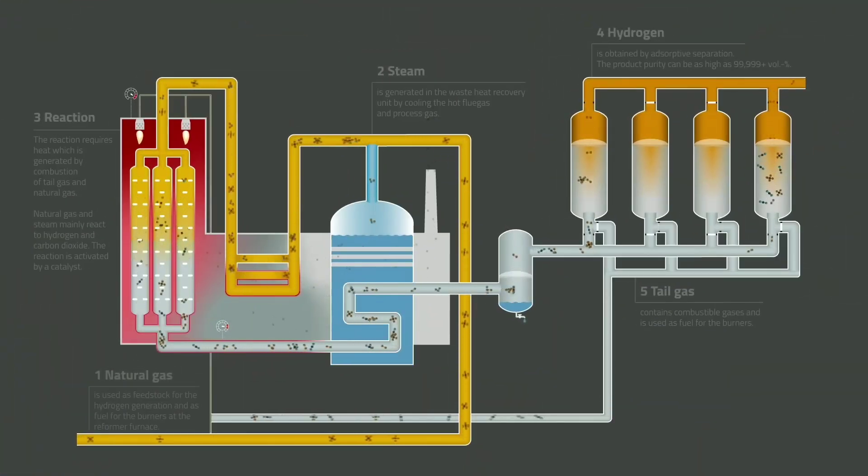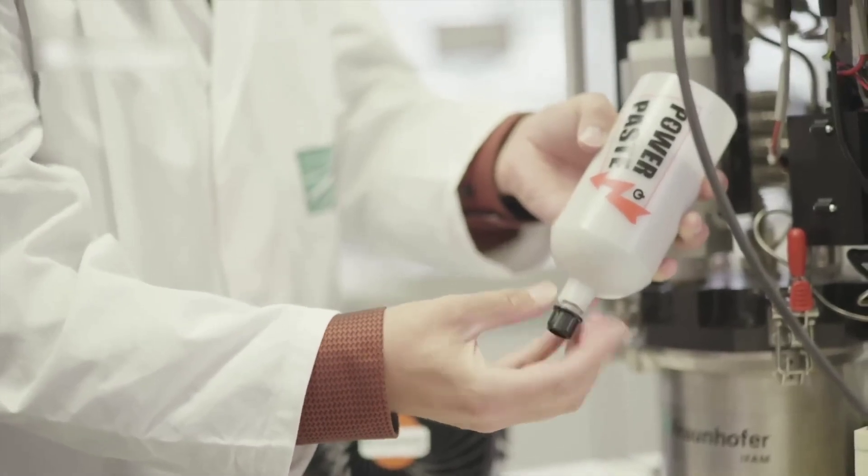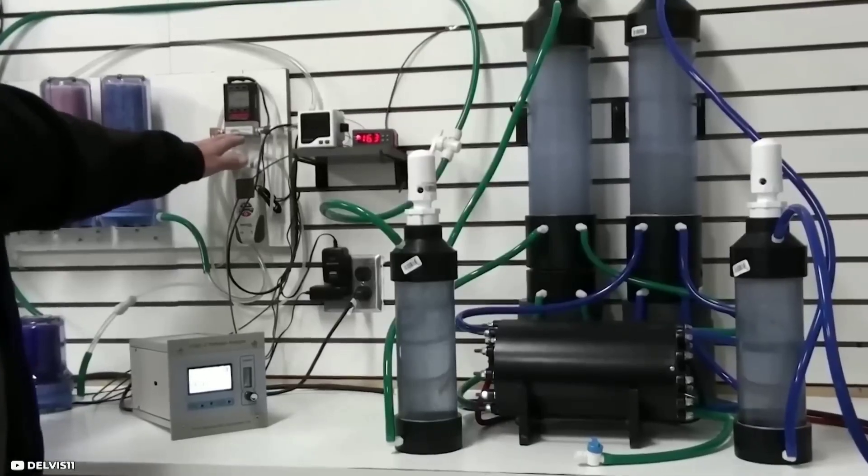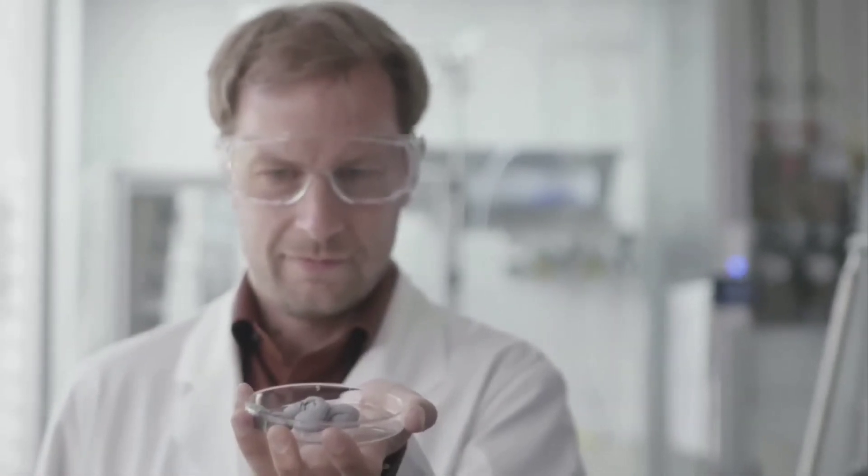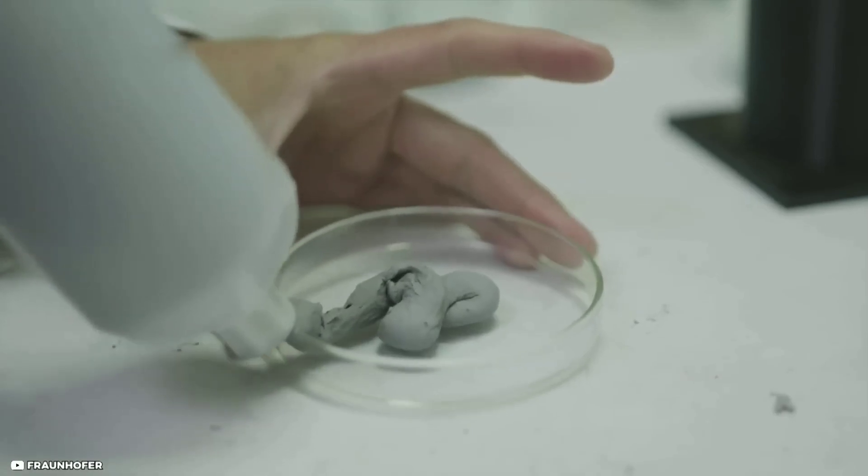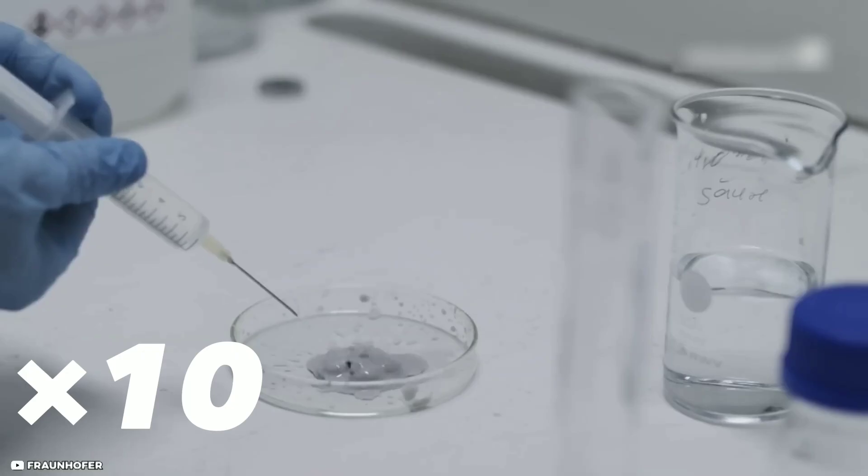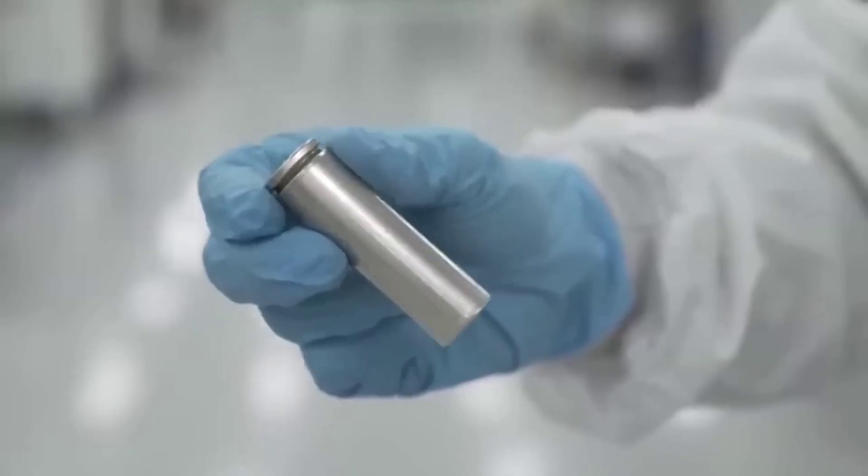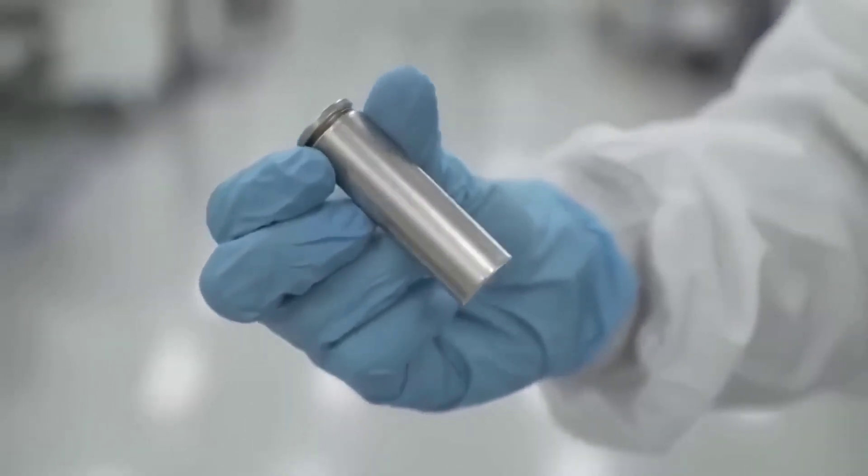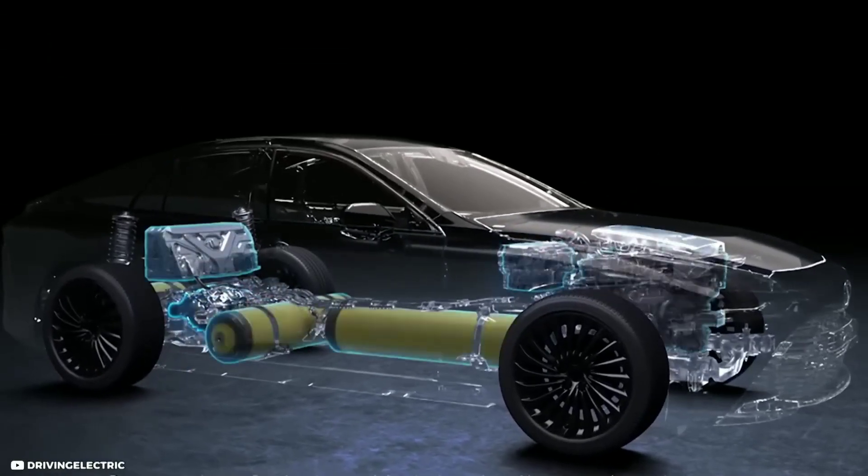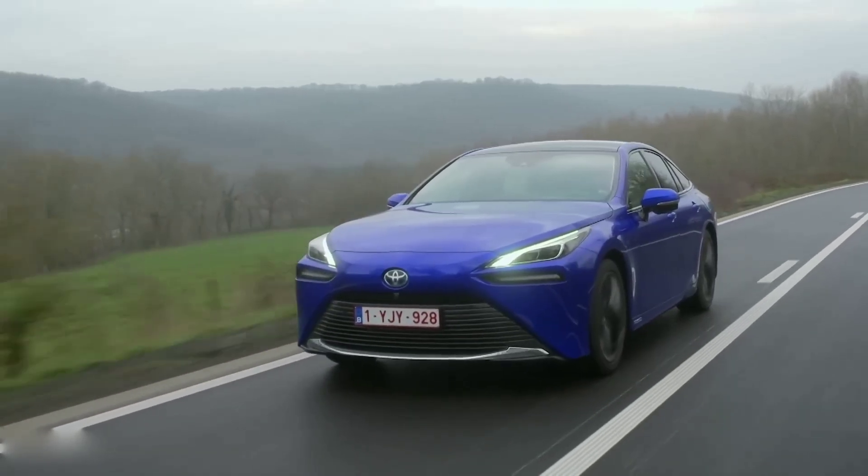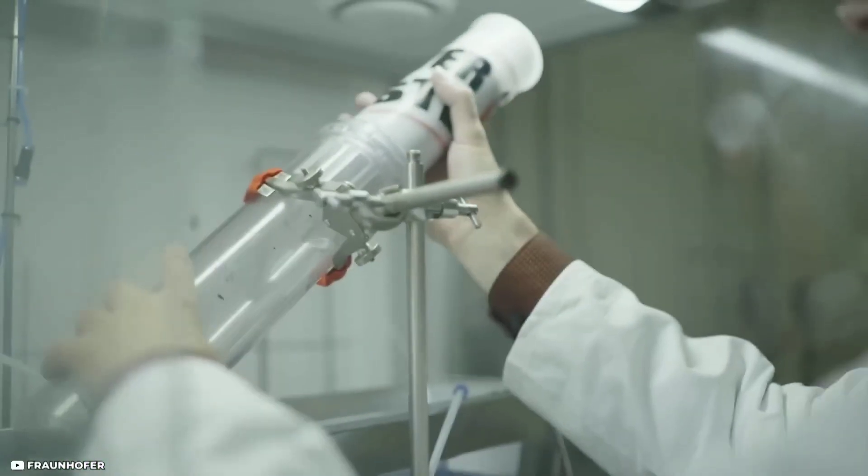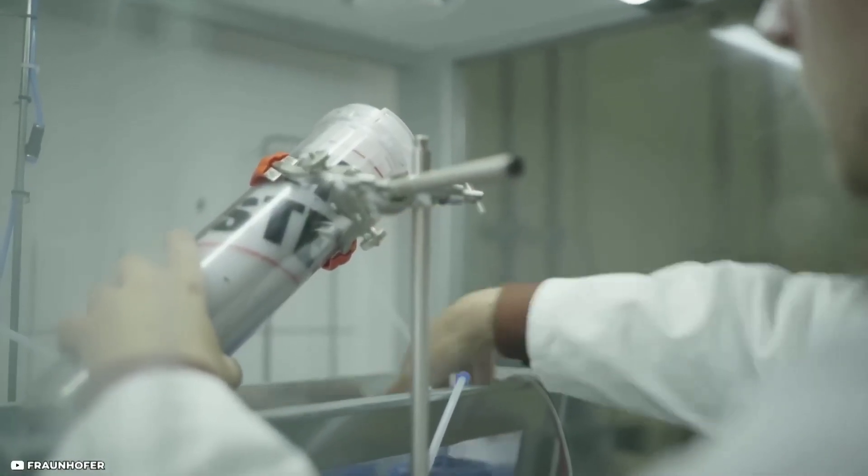But what if there was a way to store hydrogen in a paste that could be easily carried and refilled? That's what a research team in Dresden has developed: a magnesium-based power paste that can store 10 times more hydrogen energy than a lithium battery. This means hydrogen fuel cell vehicles could travel longer distances and recharge faster with this power paste. We will explain how this power paste works, its advantages and disadvantages, and its potential applications.